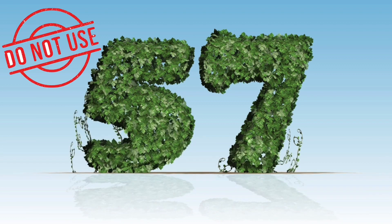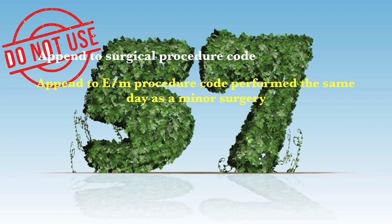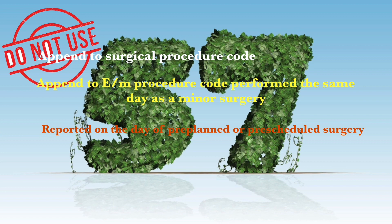Let's see the situations in which modifier 57 should not be used. First, do not append to a surgical procedure code. Do not append to any procedure code performed the same day as a minor surgery, because the decision to perform a minor procedure made immediately before the service is considered a routine preoperative service and should not be billed in addition to the procedure. Do not report on the day of surgery for pre-planned or pre-scheduled procedures, and do not report on the day of surgery if the procedure is being performed in multiple sessions or stages.